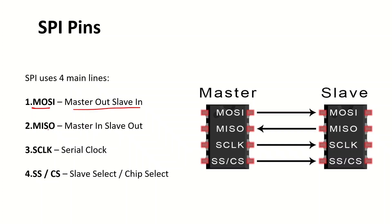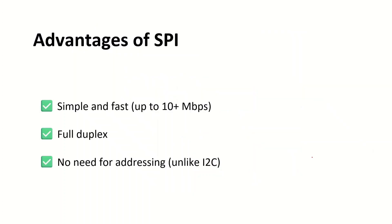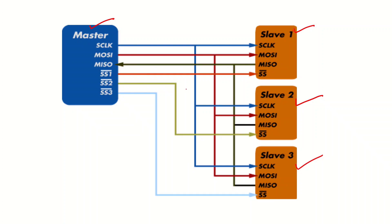MOSI is Master Out Slave In, MISO is Master In Slave Out, S-Clock is Serial Clock, and SS/CS is slave select or chip select. In SPI, the master communicates with multiple slaves — slave one, slave two, slave three. The same S-Clock is delivered to every slave, and the MOSI and MISO lines are also connected to every slave. However, the slave select pin is dedicated per slave: SS-1 for slave one, SS-2 for slave two, SS-3 for slave three.